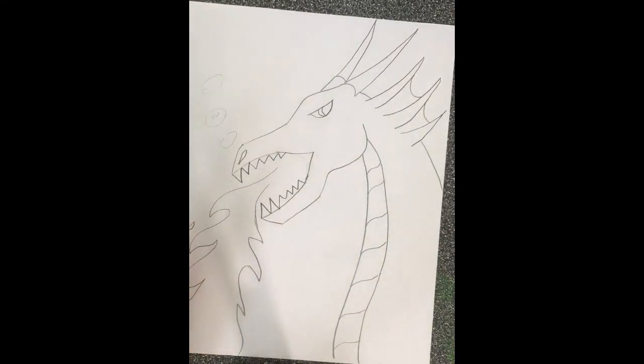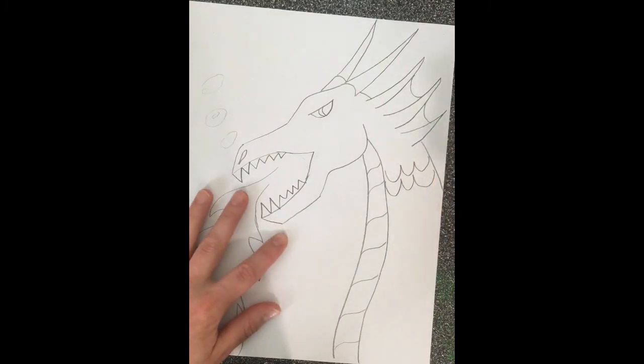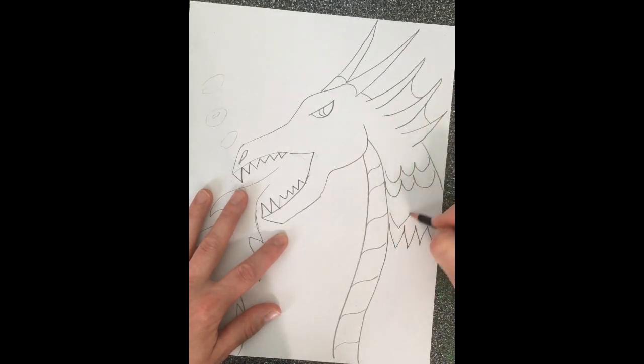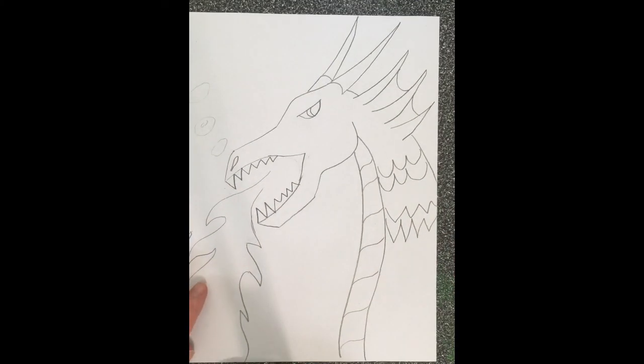Once you're happy with the way this looks you can go ahead and start adding color. You could add more detail with your pencil. If you wanted to add scales, scales could be curvy like that, scales could also be pointy. So again feel free to personalize your dragon the way you want it to look.